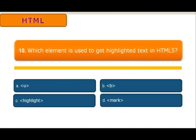Question 10 (last): Which element is used to get highlighted text in an HTML file? Options: A. <u> tag (underlined text), B. <b> tag (bold text), C. <mark> tag (highlight text), D. Markup text. The answer is C: <mark>. The mark tag is used for highlighting text in HTML.